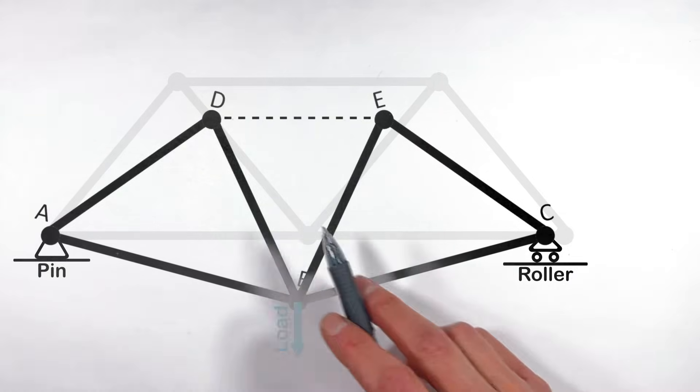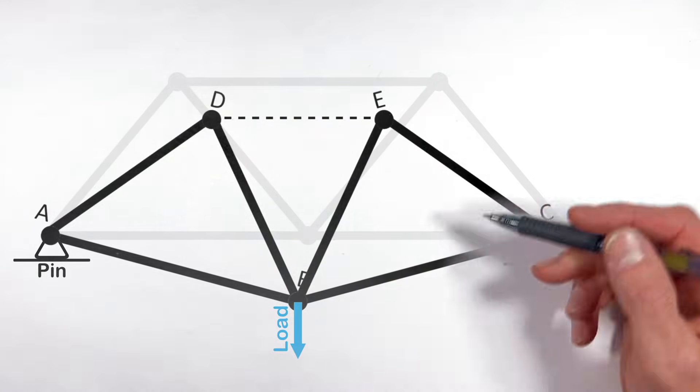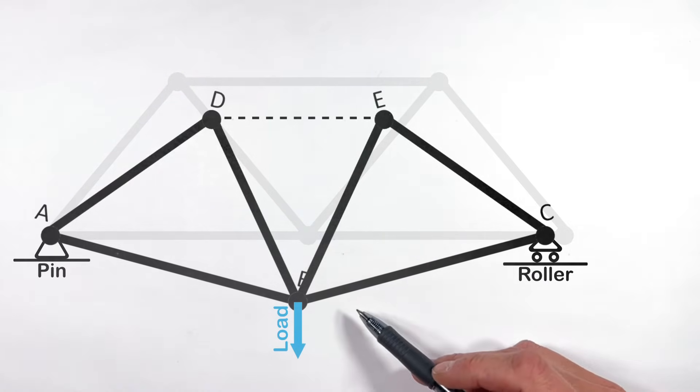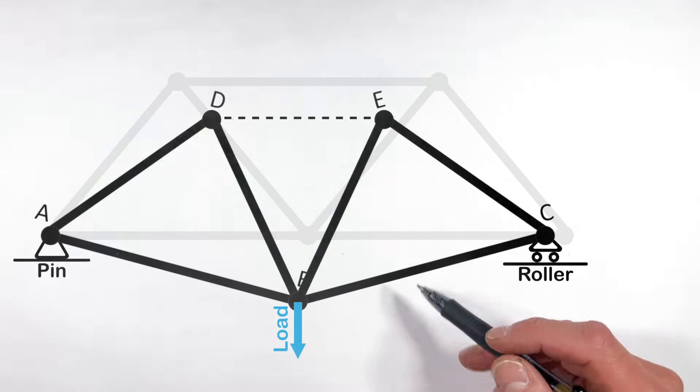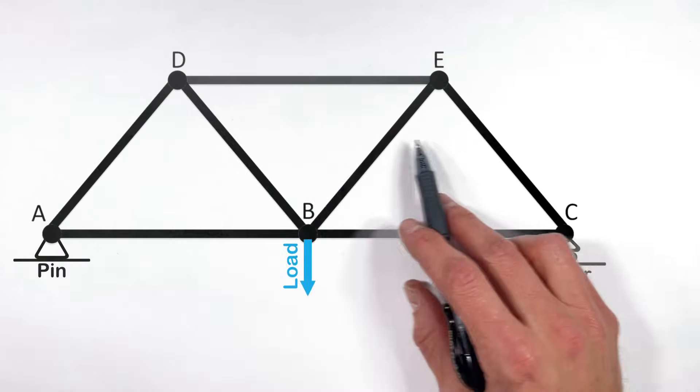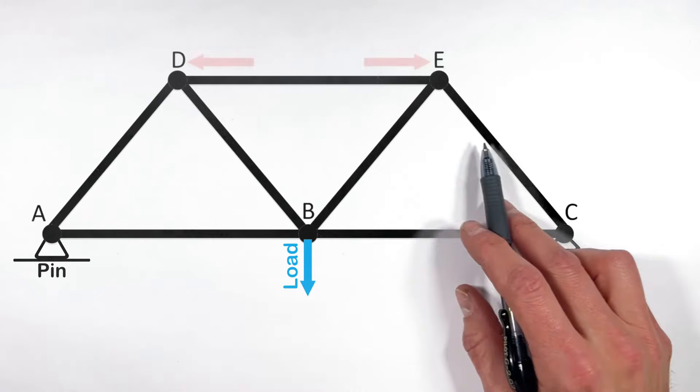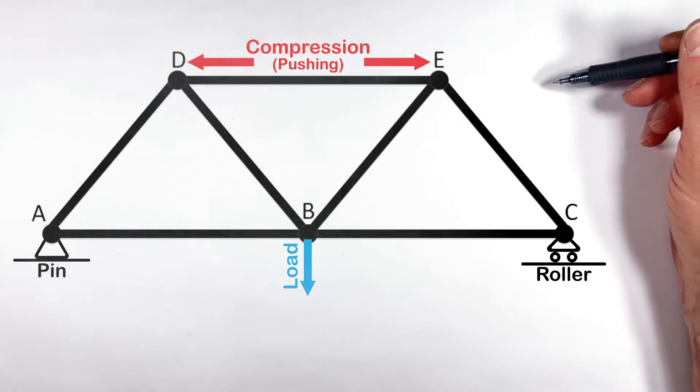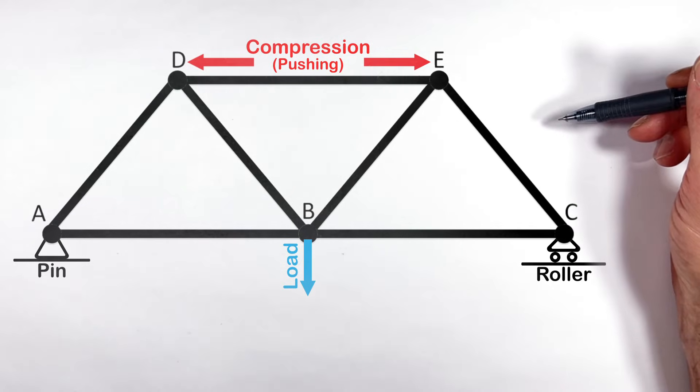And if you look at the distance between D and E after this whole truss is collapsed, you'll see D and E are much closer together than they started. Really what that means is that in order to hold this truss up, this member that runs from DE had to be pushing these two joints apart from one another. Again, a beam that's pushing on both ends is under compression.